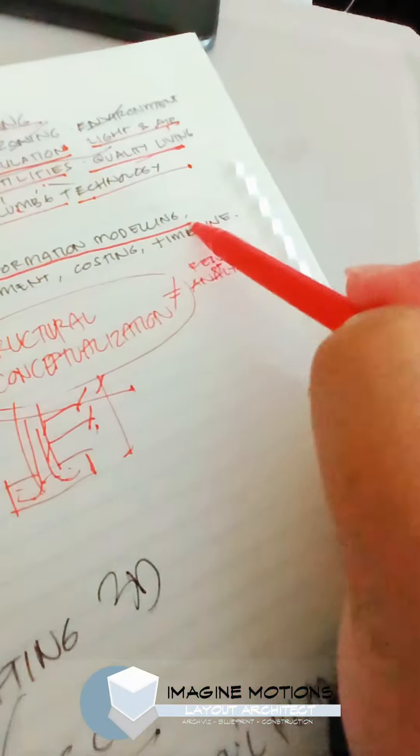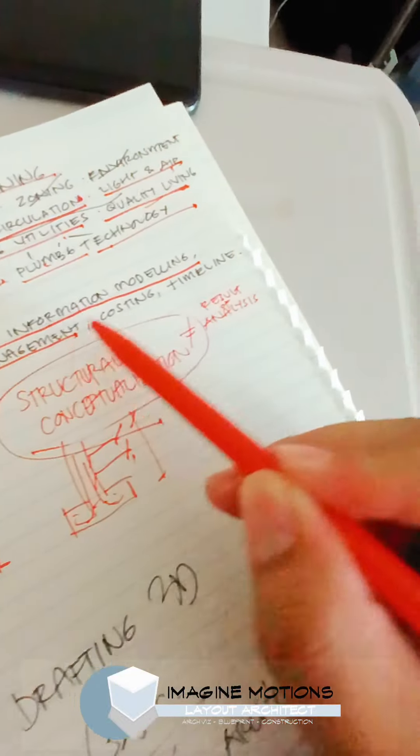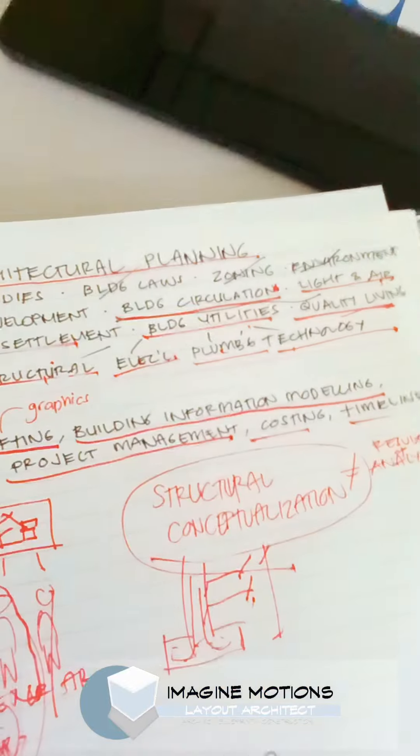Software such as building information modeling can help us do that. It gives us an overview of project management, costing, and the timeline of the project, even if we are still in the bubble diagram.